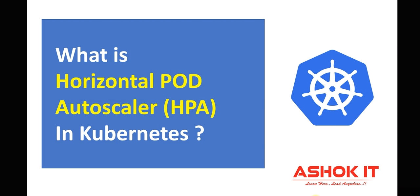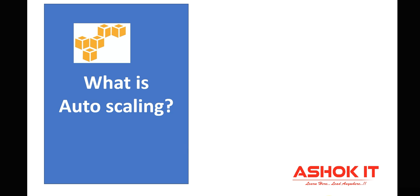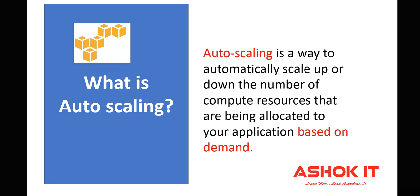Hello everyone, welcome to our channel AshokIT. My name is Ashok. In this video we will understand what is horizontal pod autoscaler in Kubernetes. Autoscaling is a way to automatically scale up or scale down the number of compute resources that are allocated to our application based on the demand.